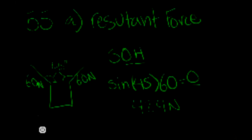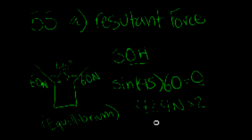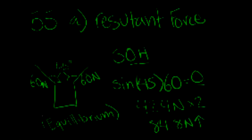Because that is only for one cable, you have to multiply it by 2. You can do that because they are identical — they have the exact same amount of tension and the exact same angle. So, multiplied by 2, you end up getting 84.8 newtons. The resultant force exerted by the two cables is in the up direction.